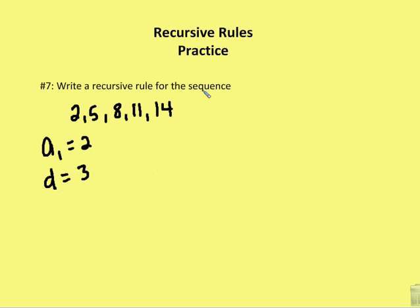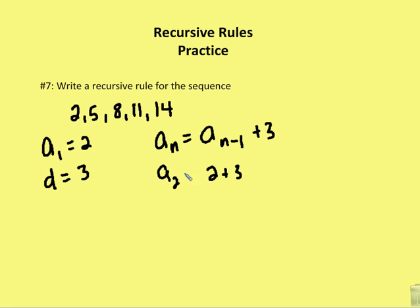The next question asks us to write a recursive rule for this sequence. I can see that a sub 1 is going to be 2, and my common difference is going to be 3. It looks like I have an arithmetic sequence. So my rule is going to be a sub n is equal to the prior value plus 3. A sub 2 is going to be a sub 1, which is 2, plus 3, so a sub 2 equals 5. A sub 3 is equal to 5 plus 3, or 8. And you can see that we have our rule.